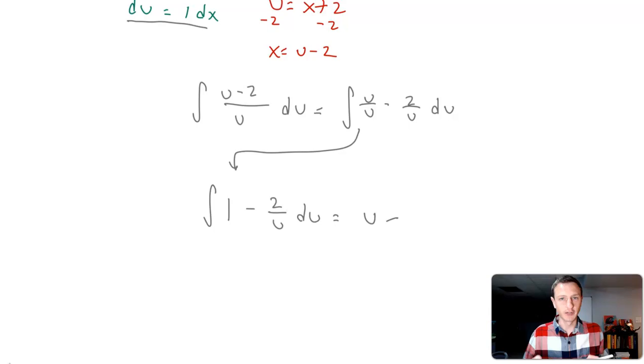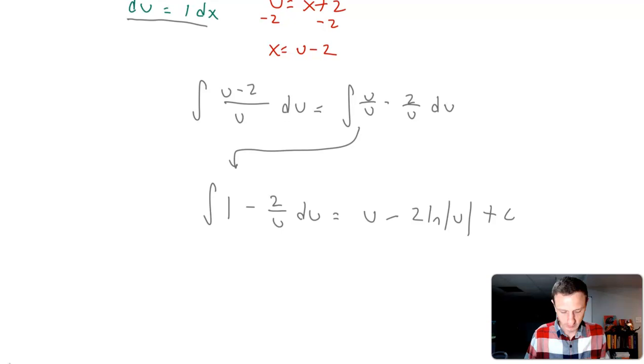Minus 2 over u. The integral of 2 over u is going to be 2 natural log of u. The integral of 1 over u is natural log of u, so here we have 2 because it's 2 over u.